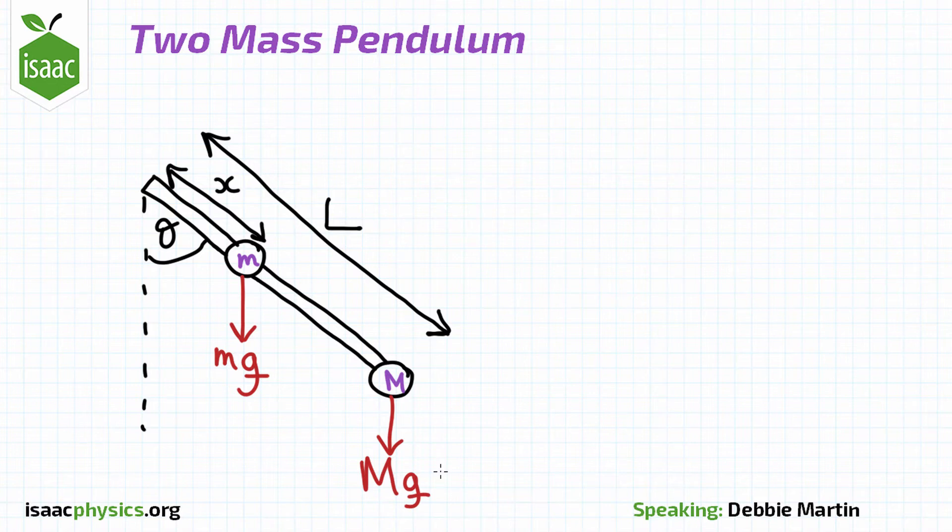We can then use Newton's second law for angular motion, taking an axis perpendicular to the plane of the paper through the pivot.